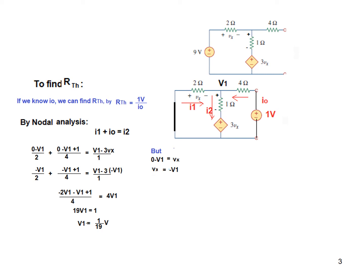Having found V1, we now find i0 using the equation: i0 equals (0 minus V1 plus 1) divided by 4. Plugging in V1 equals 1/19, we get i0 equals 18/76 amperes. Therefore, Rthevenin equals 1 volt divided by i0, which is 76/18, giving Rthevenin equals 4.22 ohms.